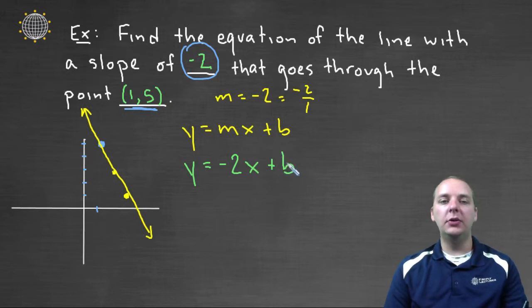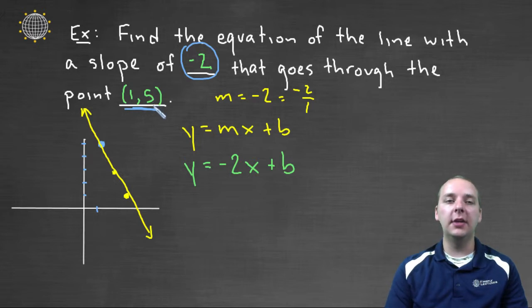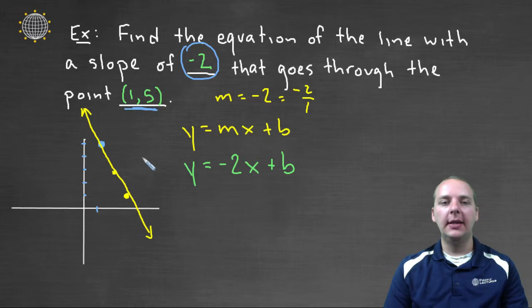But here's where the tricky part happens. The b unfortunately is not five, because five is not the y-intercept. It goes through one, five, not zero, five. So here's the question, how do we determine the y-intercept just given some random point on the graph? Well here's what we're going to do.